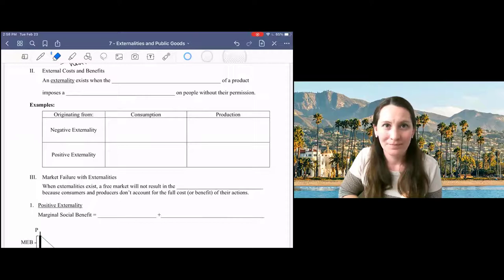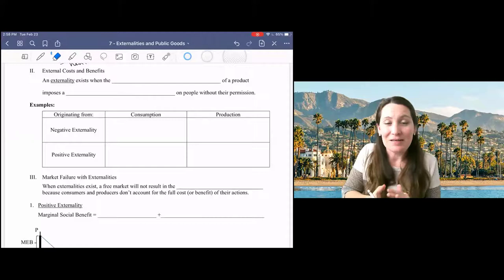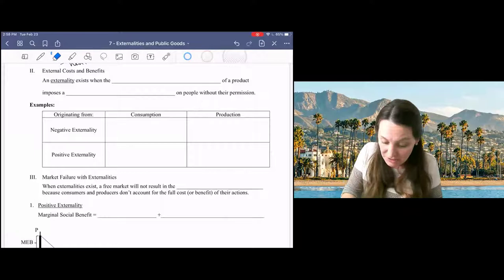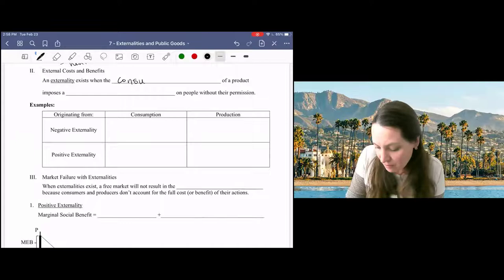Let's step back now from our pollution example to examine a broad range of external costs and benefits. An externality exists when some part of either consumption or production results in a benefit or harm external to the market.